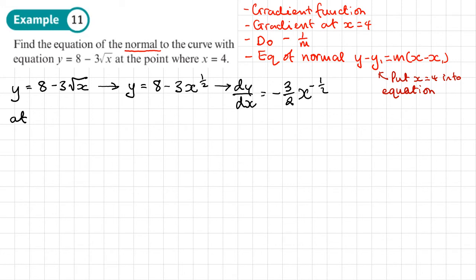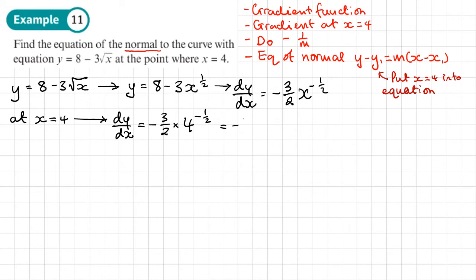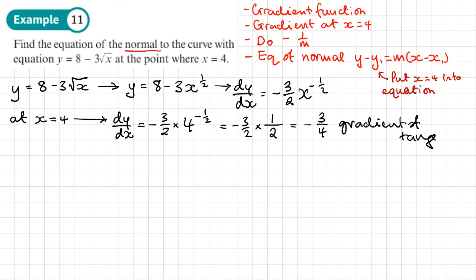We substitute x equals 4 into dy/dx, giving minus 3 over 2 times 4 to the power negative a half. Now 4 to the power negative a half is 1 over the square root of 4, which is 1 over 2. So we end up with negative 3 over 4. This is the gradient of the tangent, so negative 3 quarters is the gradient of the tangent. We want the gradient of the normal, which is the negative reciprocal: 4 over 3.